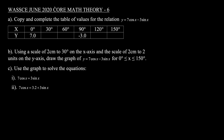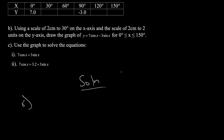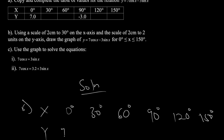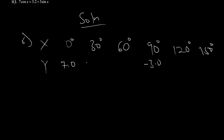Question 6a: copy and complete the table of values for the relation y = 7cosx − 3sinx. We have x and y, with values including 0°, 120°, and 150°, and given entries 7.0 and −3.0. So we are completing the table.